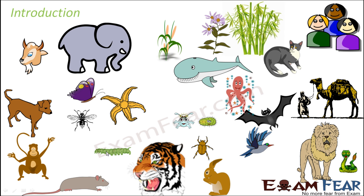Why do we need reproduction? We can look at the variety of living organisms — starting from a tiger, elephant, human beings, to small organisms like bacteria and insects. So many different things, even the plants. We see all these organisms have been existing on this planet since years together.